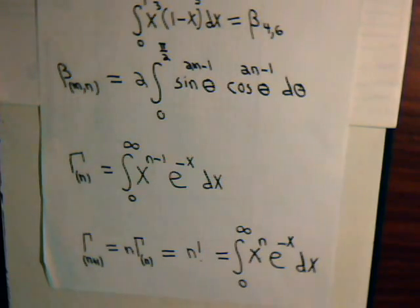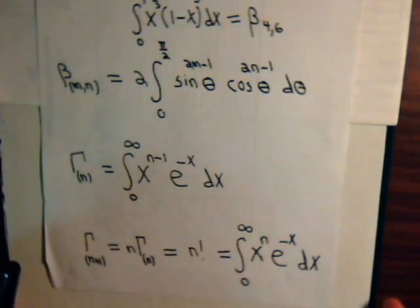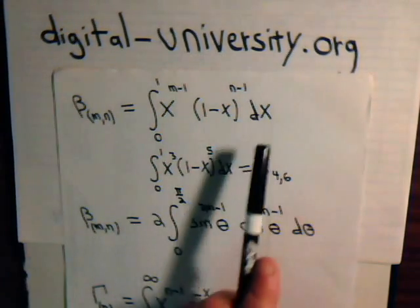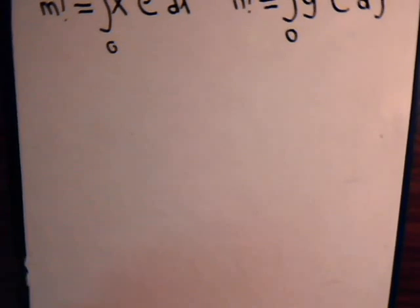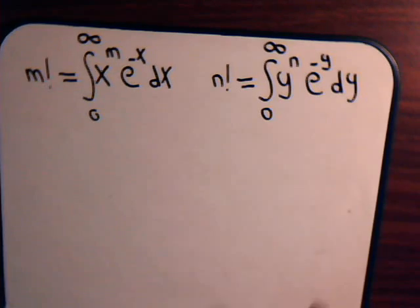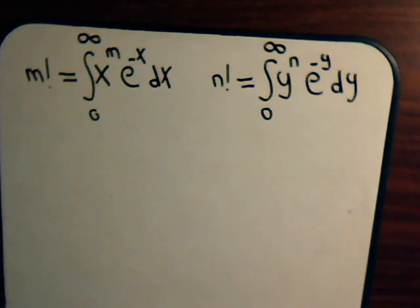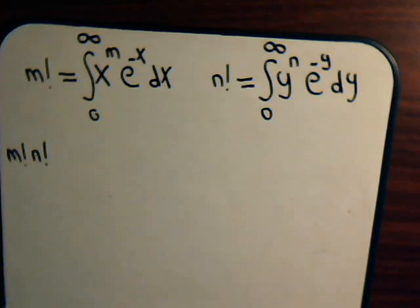In this video we want to show that the algebraic form of the gamma integral is related to the algebraic form of the beta integral. To do that, consider two factorial functions — m factorial and n factorial — both written in terms of their respective integral representations. What happens if we multiply these two factorials together? What kind of expression do we get?